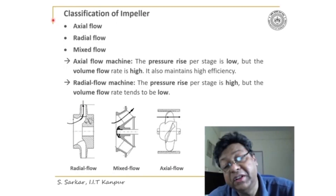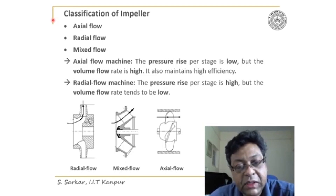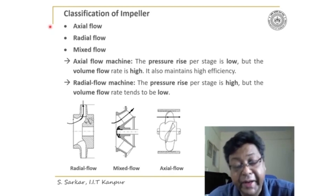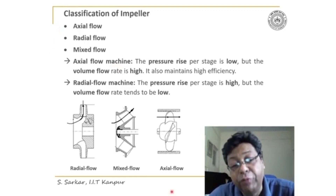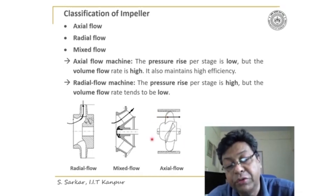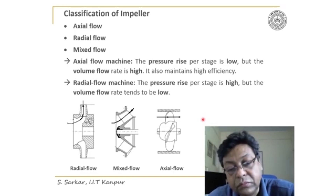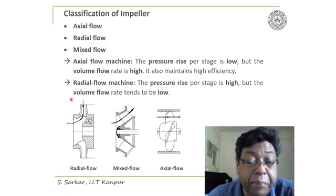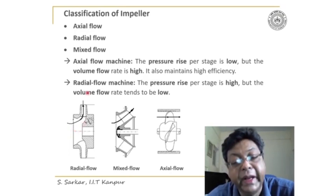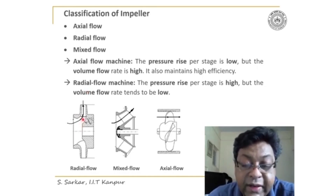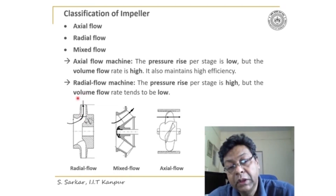The impeller can be classified further based on the direction of flow as it passes through the impeller: axial flow impeller, radial flow impeller, and mixed flow impeller. In an axial flow impeller, the flow enters parallel to the axis of rotation and also leaves the impeller axially. In a radial flow impeller, the flow enters parallel to the axis of rotation but then turns in the radial direction — when it enters the blade it becomes radial, and it leaves in the radial direction.